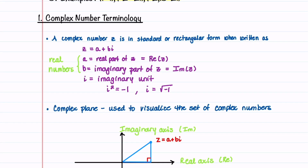A complex number is in standard or rectangular form when written as z equals a plus bi. A is the real part of z, B is the imaginary part of z, and let's remind ourselves that i squared is negative 1 and i is the square root of minus 1.